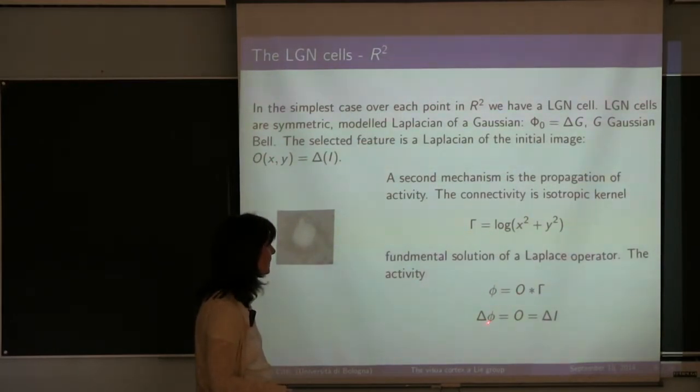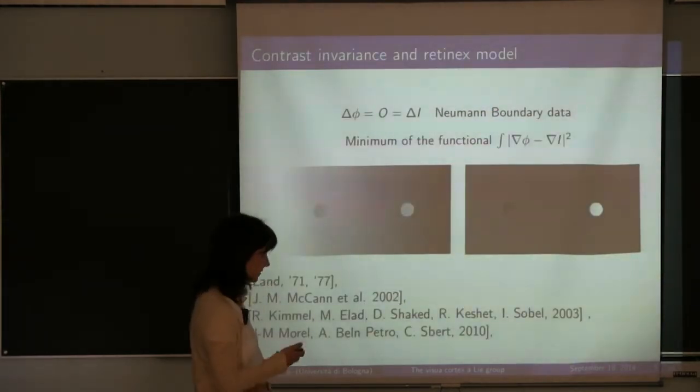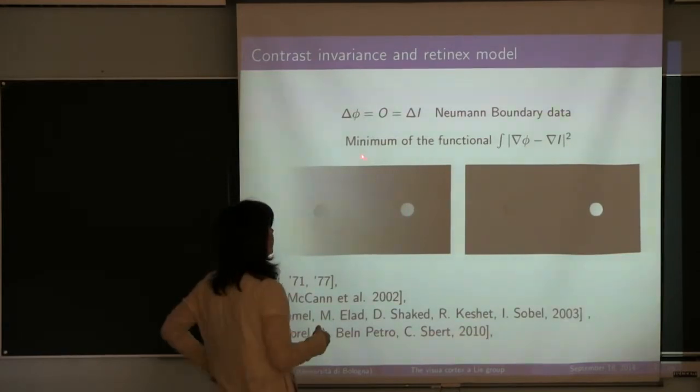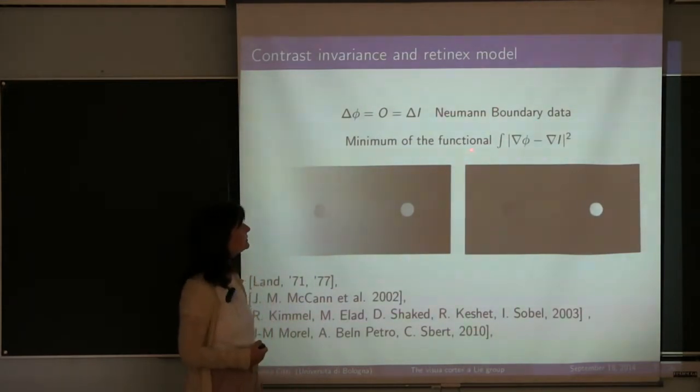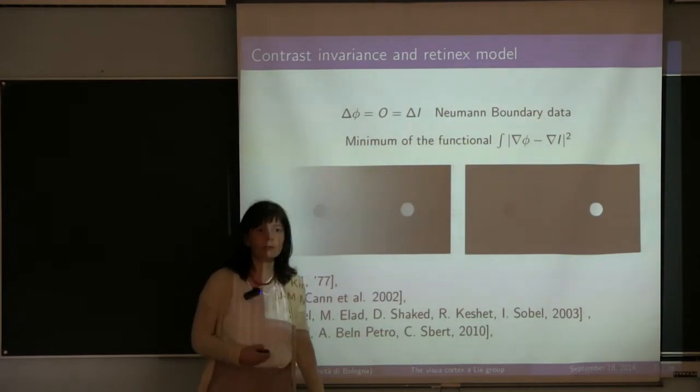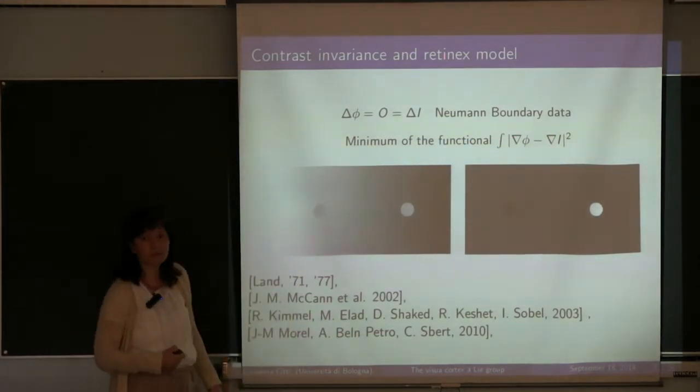And the total activity is obtained by convolution of this fundamental solution with the output. And this by definition means that the Laplacian of the activity is equal to the Laplacian of the image. I want to remark that this does not mean that the activity and the image are the same. It means that the activity and the image differ from a harmonic function. And so I repeat here the same formula as before and I put a Neumann boundary data. And this is an example because this equation, which can be considered the minimum of the Dirichlet functional, also appears while studying the Retinex model.